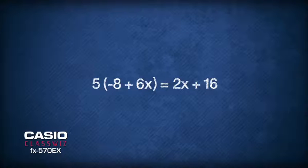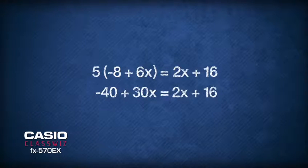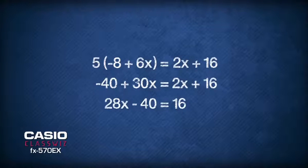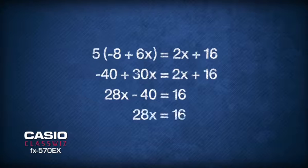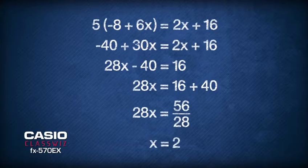Now we have an equation where the only unknown term is x. Thus, we can use this equation to solve for x. Expanding the left-hand side gives us negative 40 plus 30x. Subtracting 2x from both sides, we get 28x minus 40 equals 16. Shifting the negative 40 to the right-hand side gives us 28x equals 56. Finally, dividing both sides gives x equals 2.